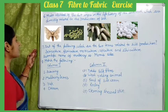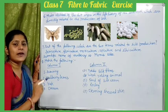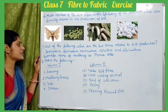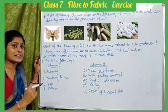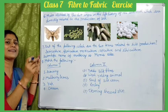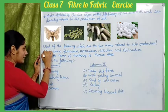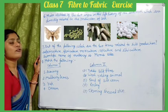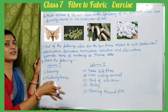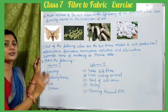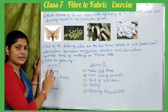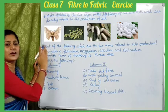The next question asks: out of the following, which two terms are related to silk production? The first term is sericulture — the rearing of silkworms for obtaining silk. The second term is mulberry culture (moriculture) — the cultivation of mulberry leaves, which is the food of silkworms, and therefore also related to silk production.